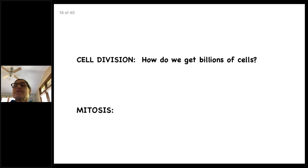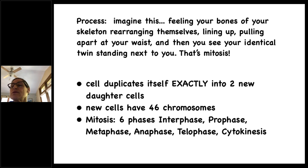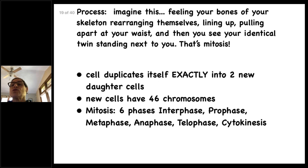Next we're going to cover cell division — how we end up with billions of cells in our body. It's called mitosis. Imagine you feel the bones of your skeleton rearranging themselves, lining up, and pulling apart at your waist, and then you see your identical twin standing next to you — that's mitosis. The cell duplicates itself exactly into two new daughter cells, each with 46 chromosomes. Mitosis has six phases: interphase, prophase, metaphase, anaphase, telophase, and cytokinesis.